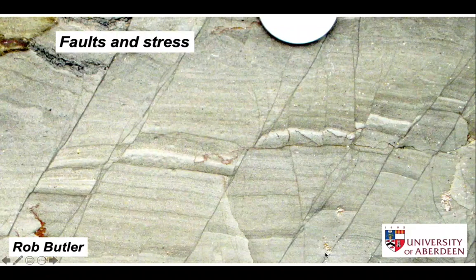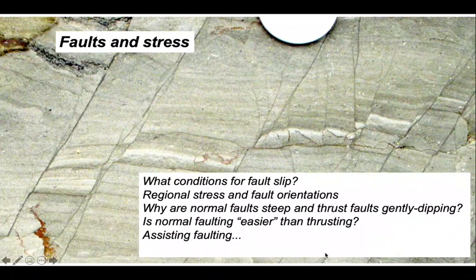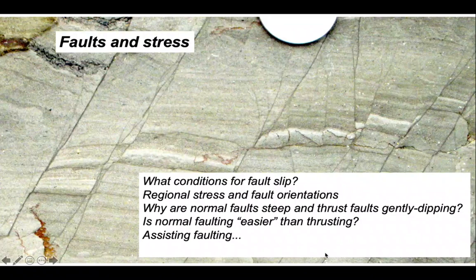An ambition in structural geology is to try and deduce the stress regime under which specific structures developed. The sorts of questions we might want to ask are: what conditions could faults slip under? Can we deduce the regional stress regime under which faults developed? We can answer specific questions such as why are normal faults steep and thrust faults gently dipping, and whether normal faulting is easier than thrusting, and whether there are particular ways in which conditions in the earth might promote faulting.